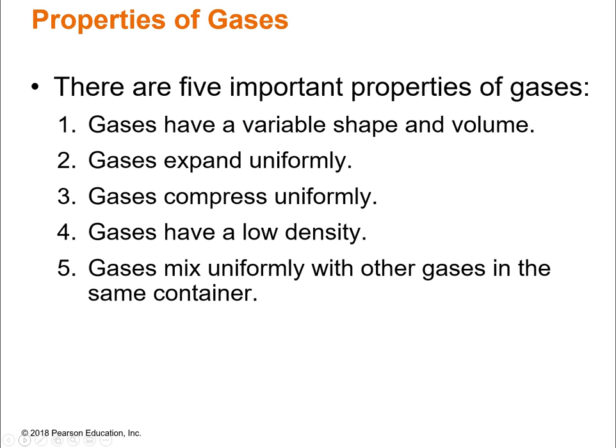First thing we're going to cover is the properties of gases. We talked about these in chapter 3 when we were talking about solids, liquids, and gases, but we're going to do a quick refresher. The five important properties of gases: they have a variable shape and volume, they expand uniformly, compress uniformly, they have a low density, and they mix uniformly with other gases in the same container. We're going to go through each of these in detail.